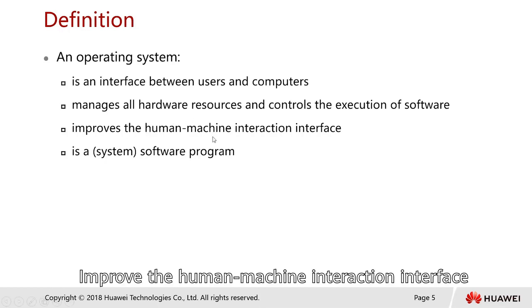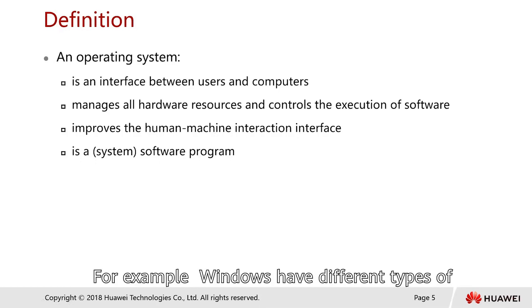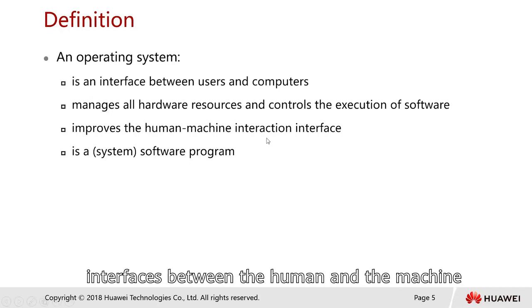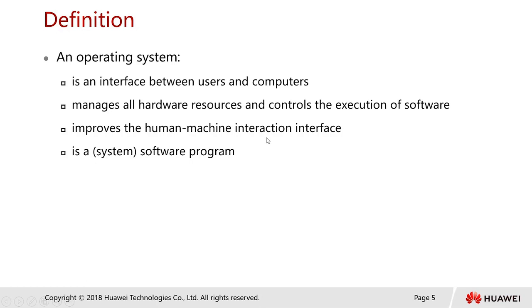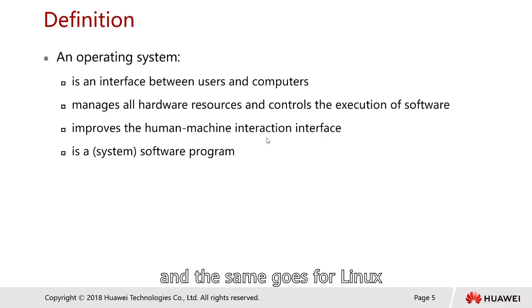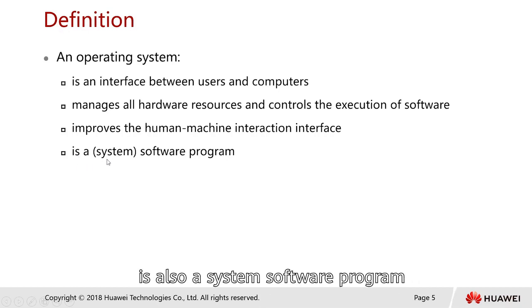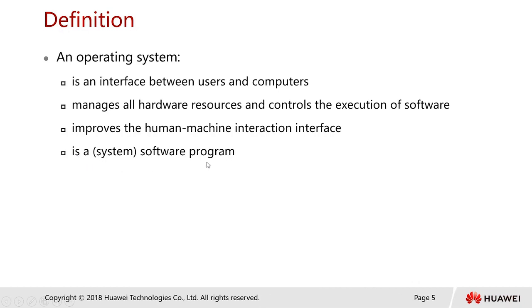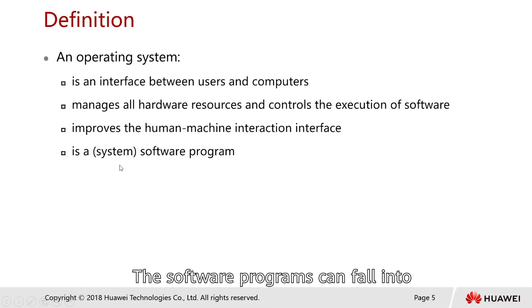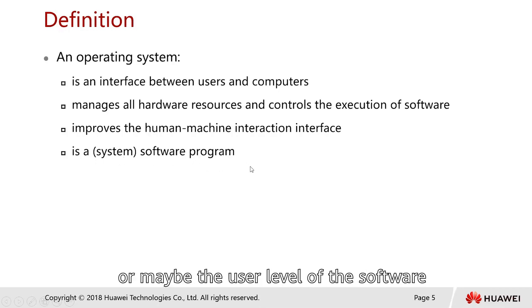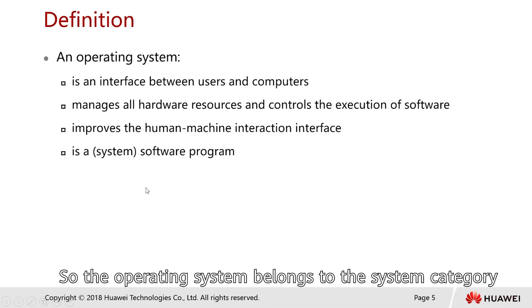The OS also improves human and machine interaction interfaces. Windows has different types of interfaces between human and machine, Mac OS has their own different interfaces, and Linux has a much greater variety of choices to interact. The operating system is a system software program. Software programs can be classified into the system level and the application or user level. The operating system belongs to the system category.